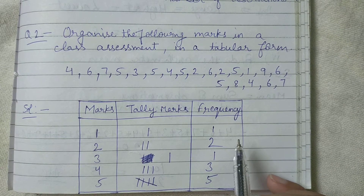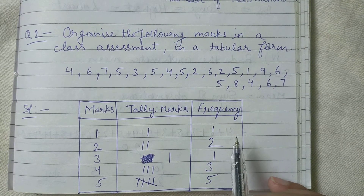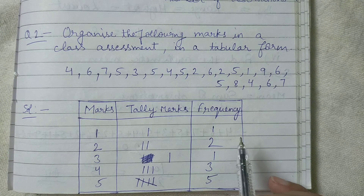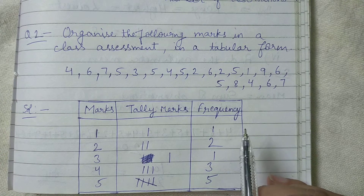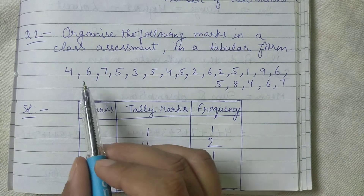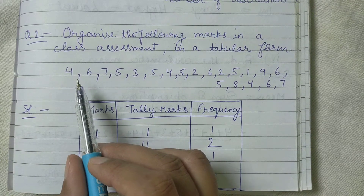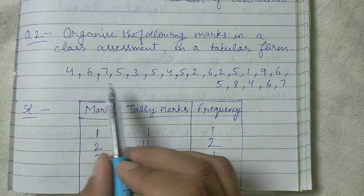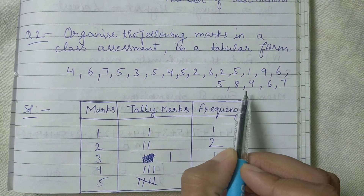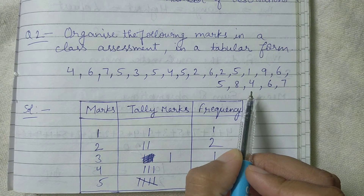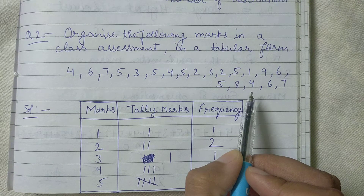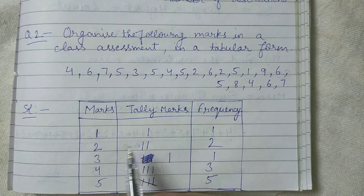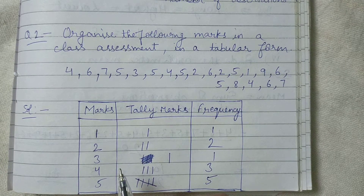What is frequency? Frequency means how many times a number appears in the observation. For example, if you want to check the frequency of four — check how many times the number four appears. One, two, and three. It appears three times. So the frequency of four is three.